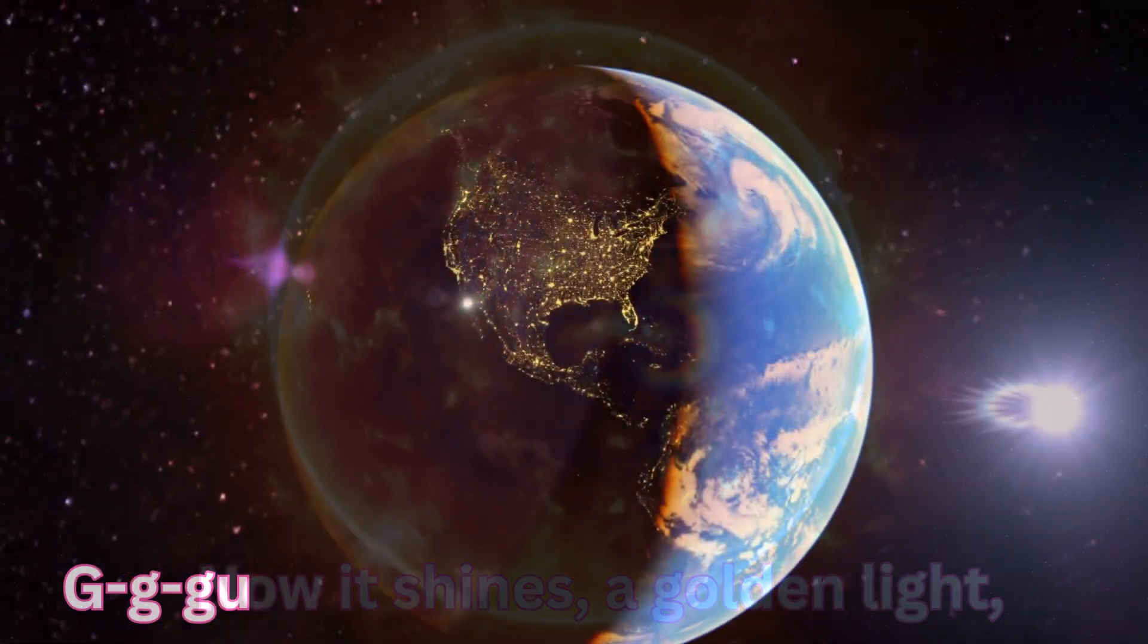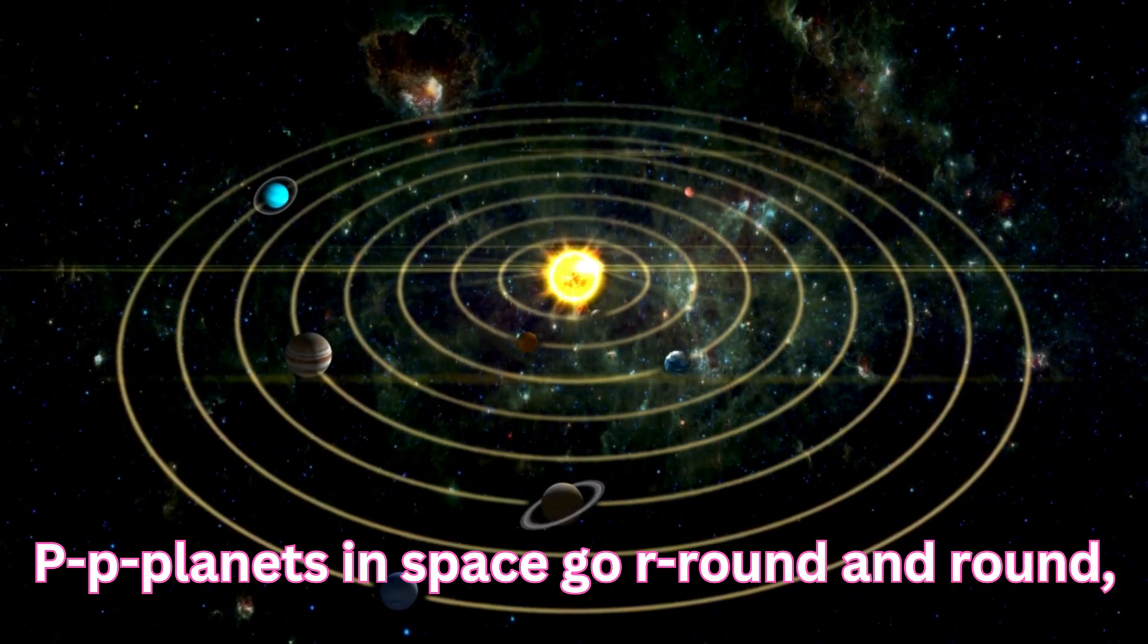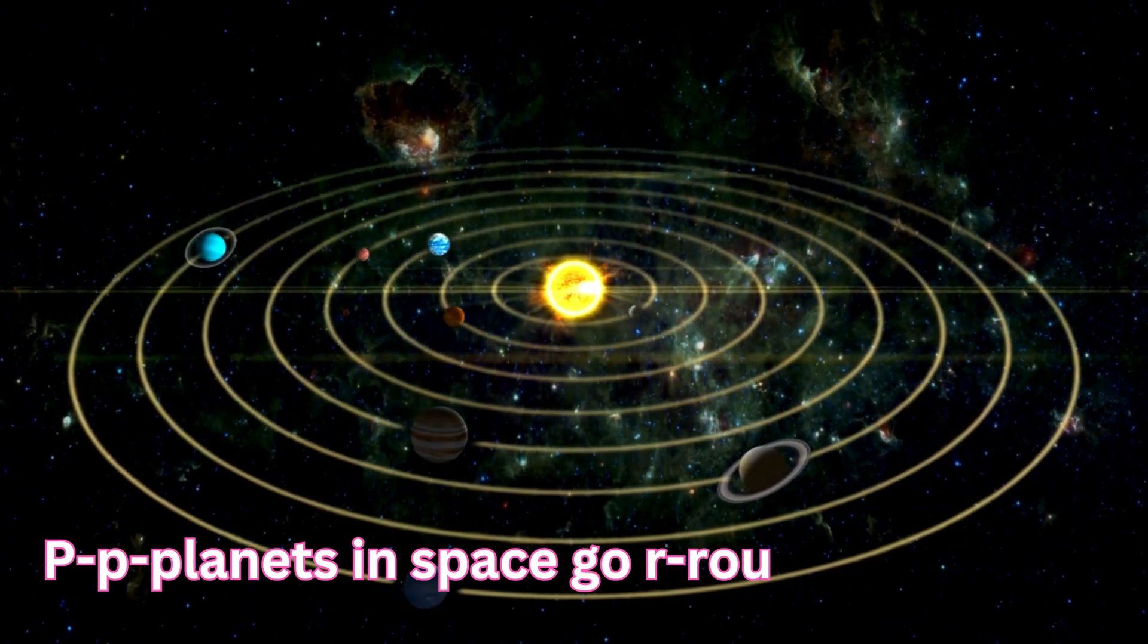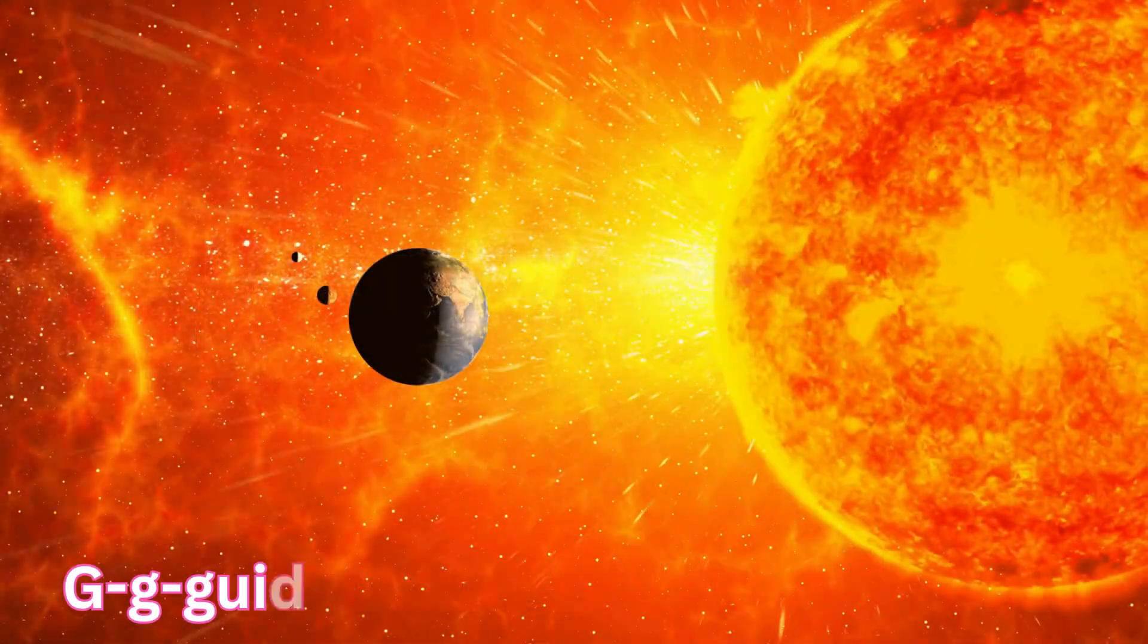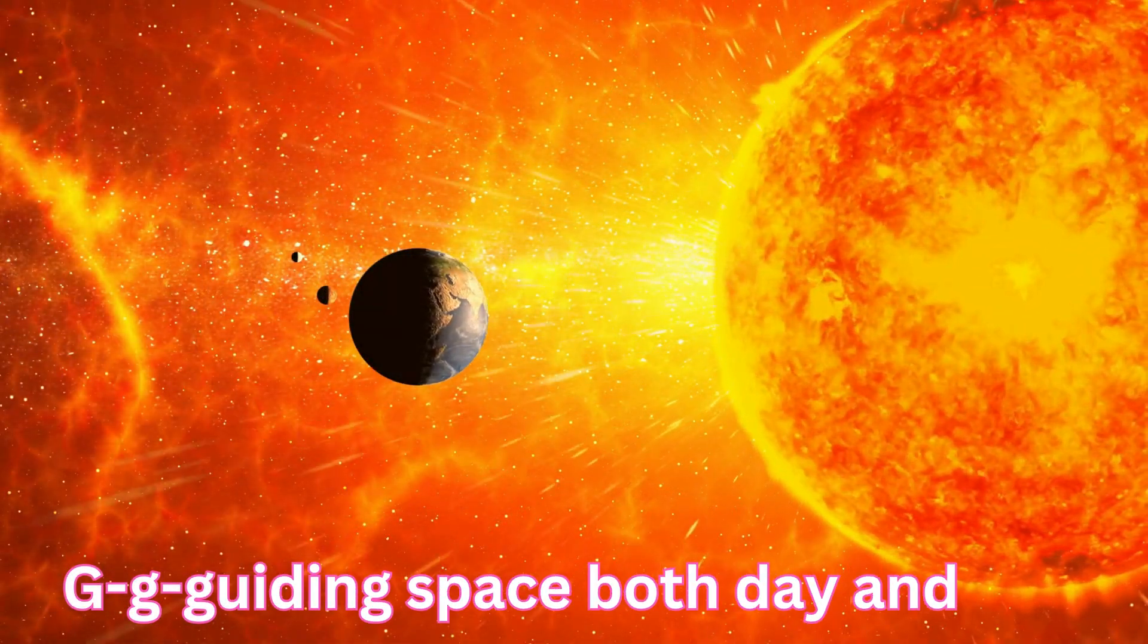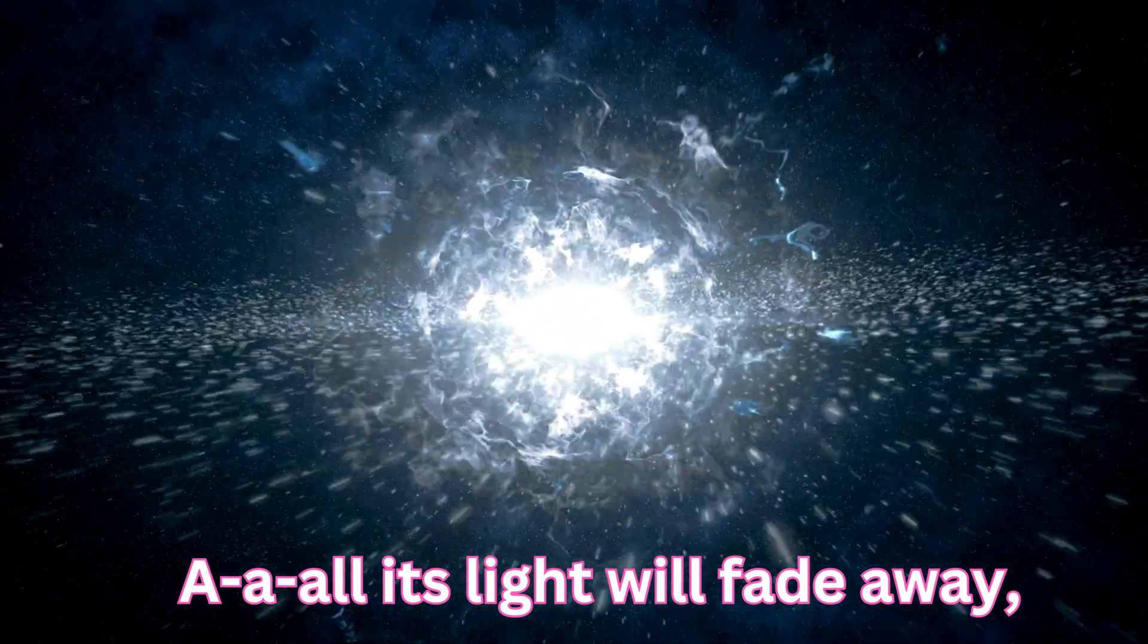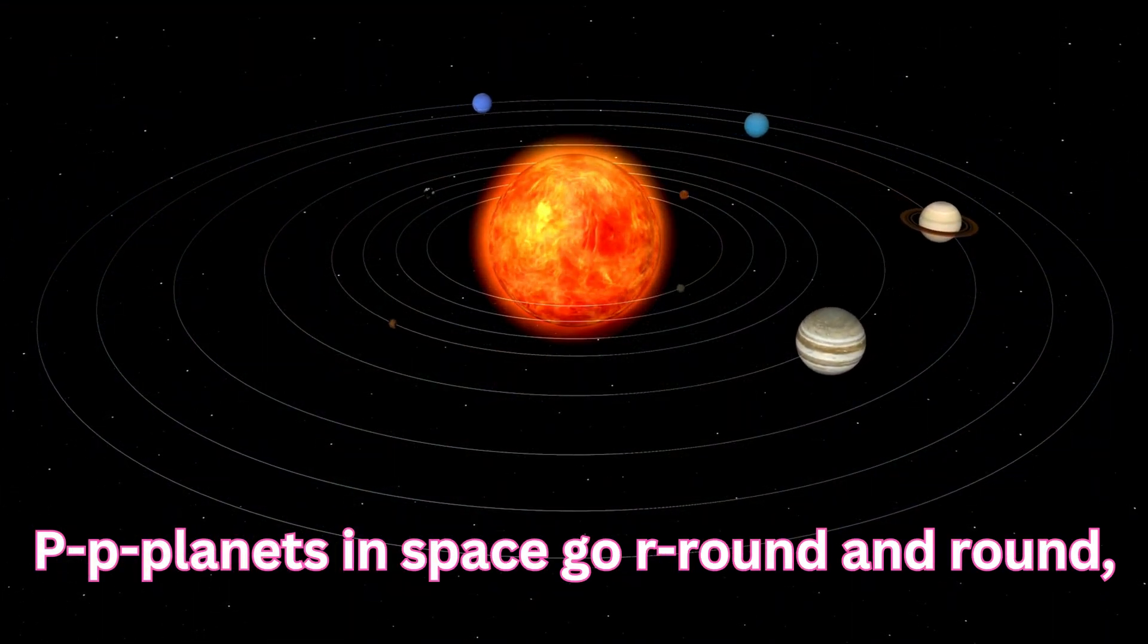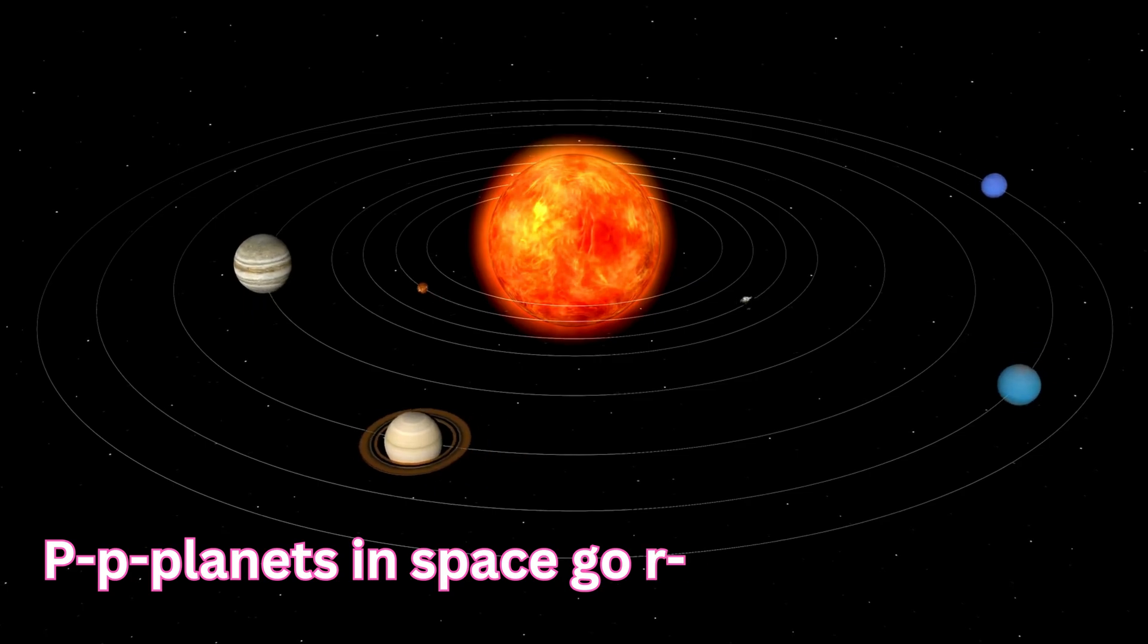Fade away, a quiet star so far away. Planets in space go around and round, around and round, around and round.